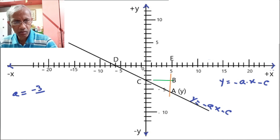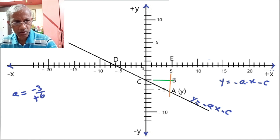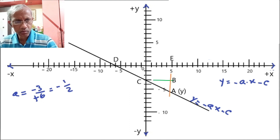Using the similar triangles, the ratio OC over BC equals minus 3 over 6. BC is positive, so in the triangle BCA, BC is taken as positive. Therefore a equals minus 3 divided by 6, which is equal to minus one half.